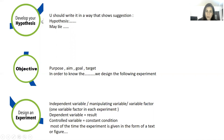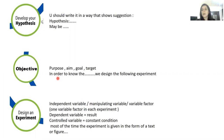Then the objective of the experiment. The objective of the experiment is the head of the experiment — it is the purpose, the aim, or the goal of this experiment. Most of the times we say 'in order to know [something], we design the following experiment.' So 'in order to know' is the objective of the experiment.